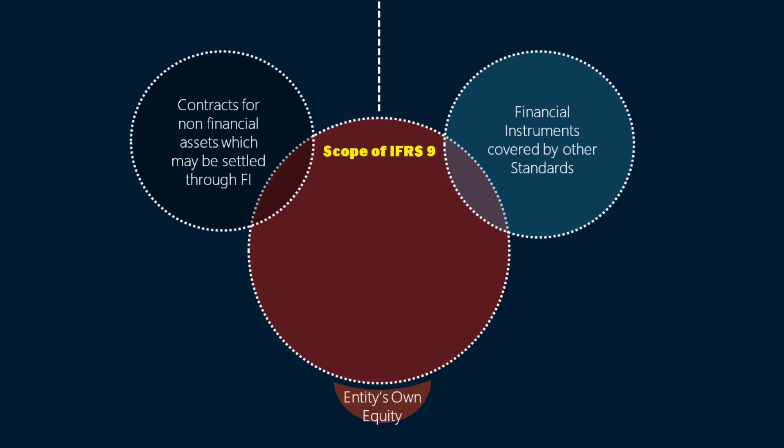Contracts for the delivery of non-financial items like commodities or livestock may also be accounted for under IFRS 9. For example, a contract to purchase a flock of sheep may also be accounted for under IFRS 9. That's allowed when such contracts can be settled in cash or other financial assets, meaning such contracts may settle in cash or by actual delivery. Of course there's more detail about when such contracts shall and shall not be treated under IFRS 9.